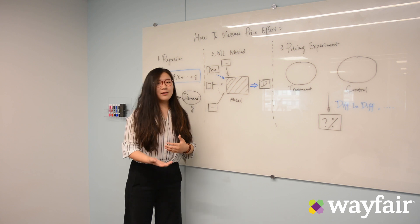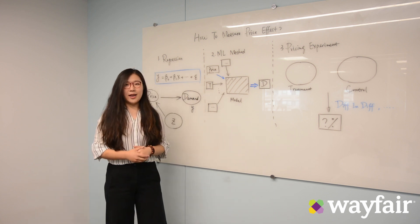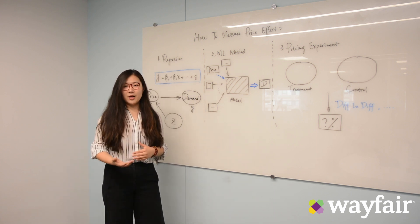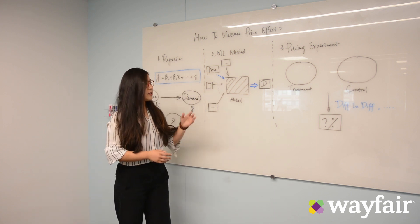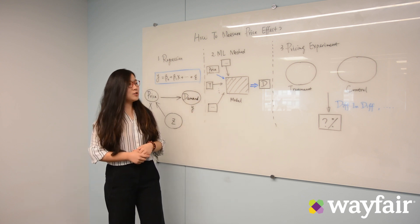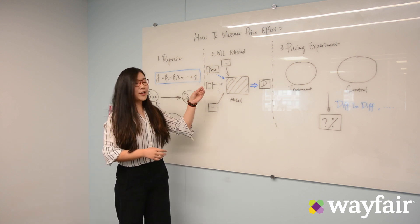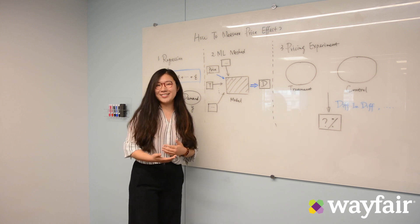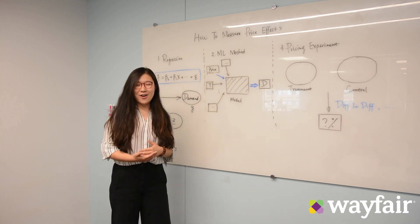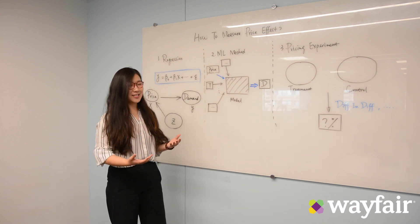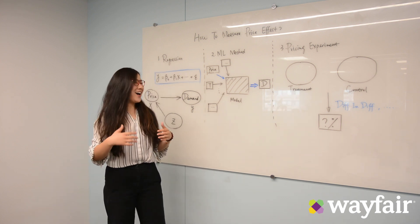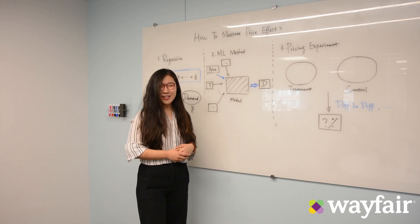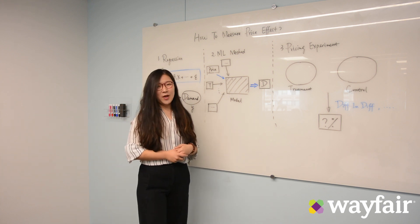We have a couple of approaches like partial dependence plots and Deep IV to look into this black box of machine learning and understand how our price is impacting our demand. That is the second way.